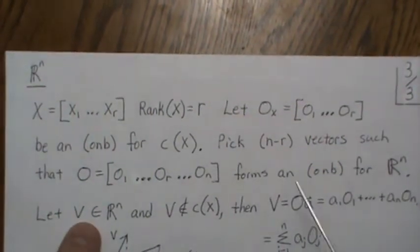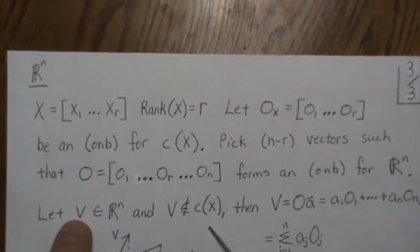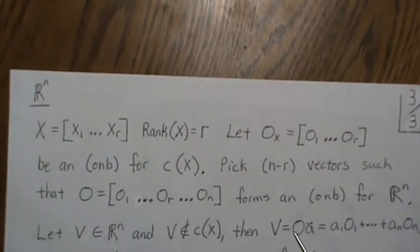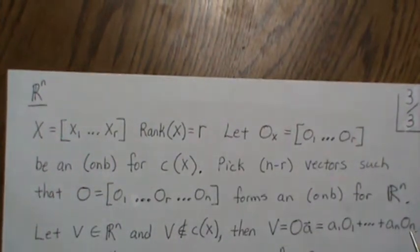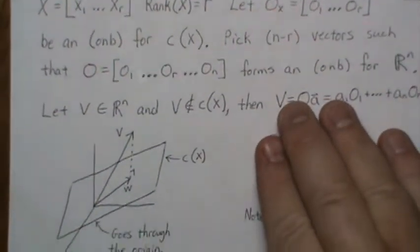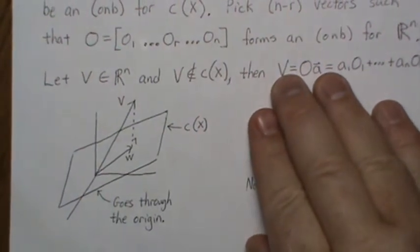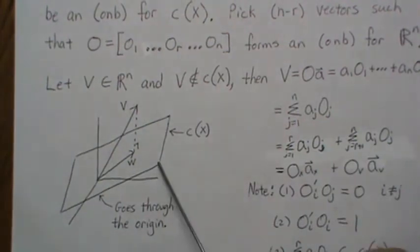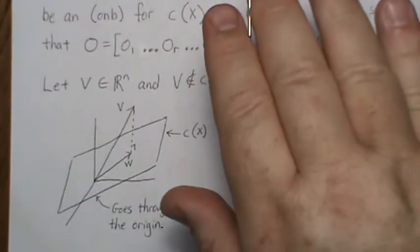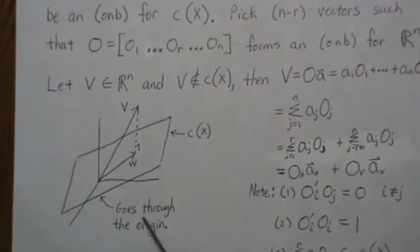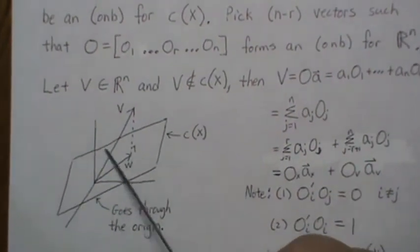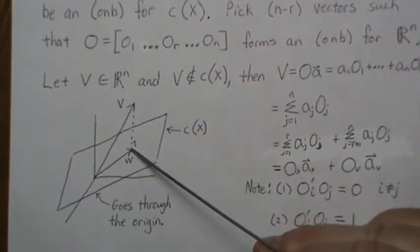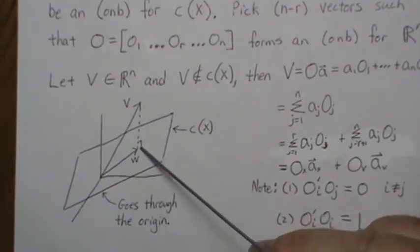We pick R minus N additional vectors so that together they form an orthonormal basis for all of Rn. Now let V be in Rn but not in the column space of X. Then V is a linear combination of all these orthonormal vectors — O1 through ON — for some real numbers A1 through AN. Generically, the column space is a subspace of Rn that passes through the origin, and we pick a vector not in this column space that we want to project down into it orthogonally.